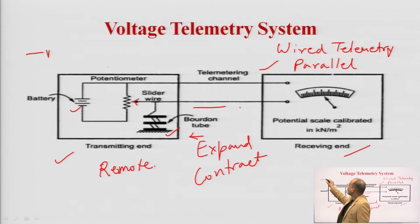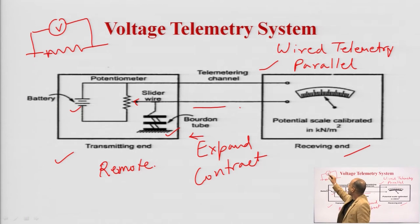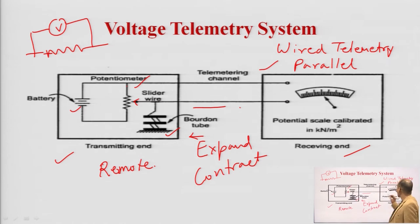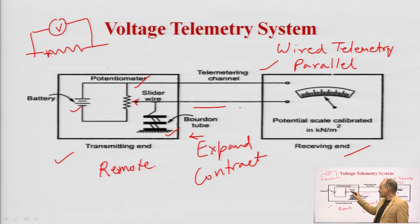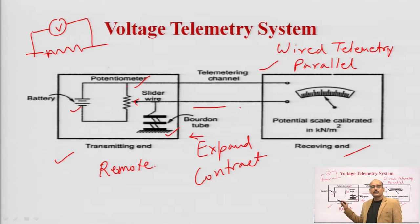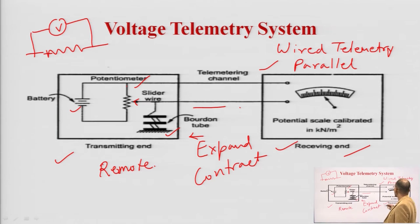Whenever you want to measure the voltage across any system, you always connect the voltmeter in parallel. Here you can see that the potentiometer is connected in series, but the voltmeter — or the potential scale calibrated for voltage measurement — is connected in parallel. As the Bourdon tube expands or contracts with pressure, the position of the slider wire changes. That changes the resistance of the potentiometer, and that change in potentiometer resistance is measured in the form of voltage at the potential scale through connecting wires, also called telemetry channels.